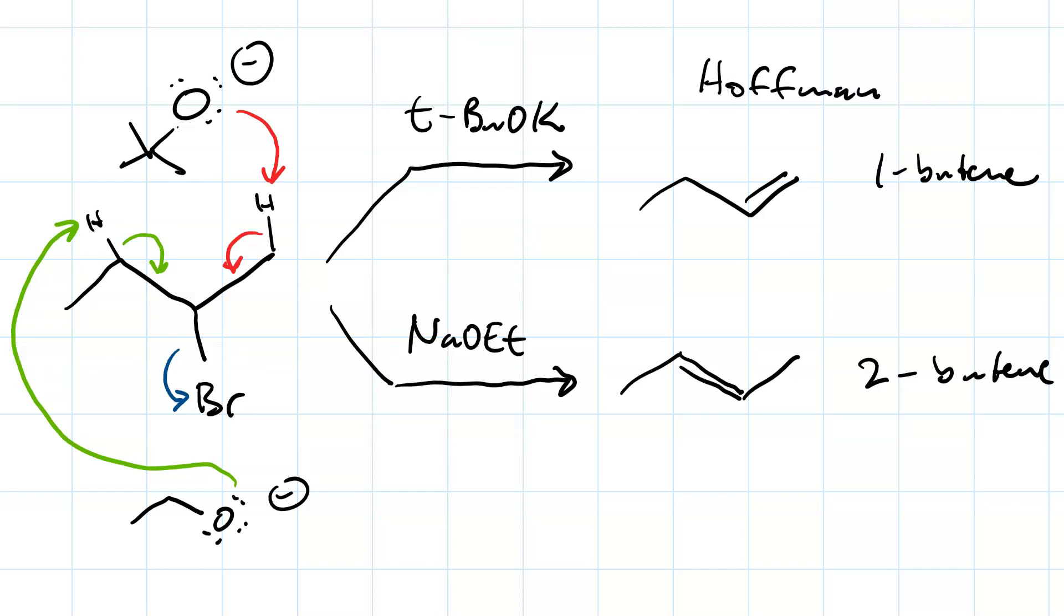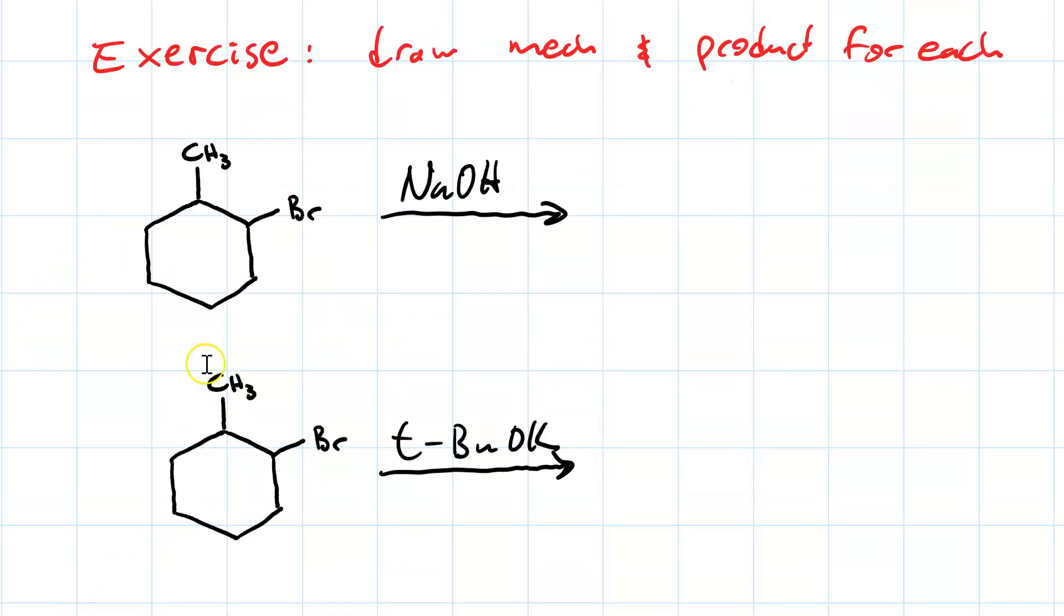Now you try one. Here's an exercise. We've got 2-methyl-1-bromocyclohexane as our substrate. In one case, we do an E2 reaction by treating it with sodium hydroxide. In another case, we do an E2 reaction by treating it with tert-butoxide.